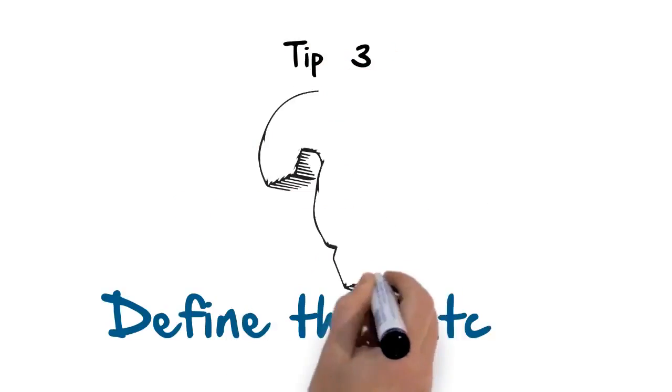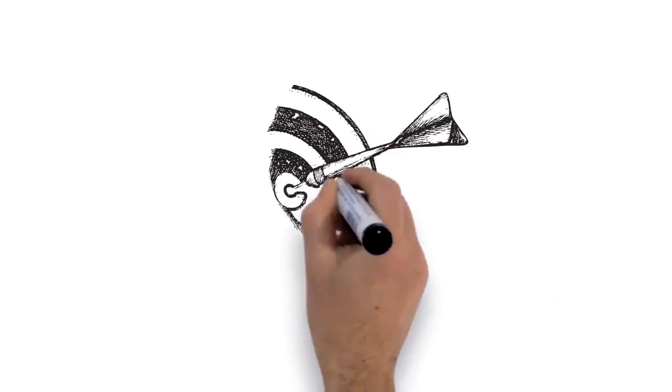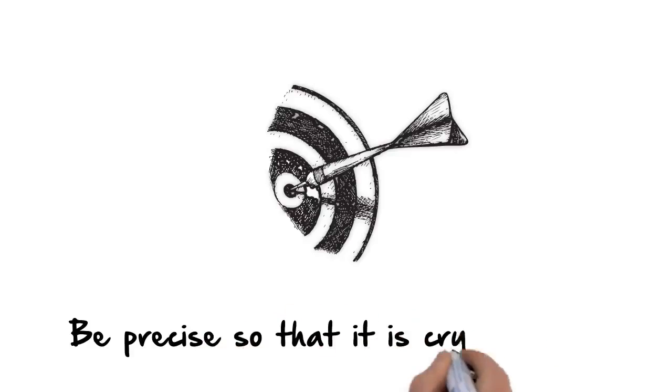Tip 3: Define the Outcome. Write down exactly what you want to achieve in detail. Be precise so that it's crystal clear and you can laser focus on it.